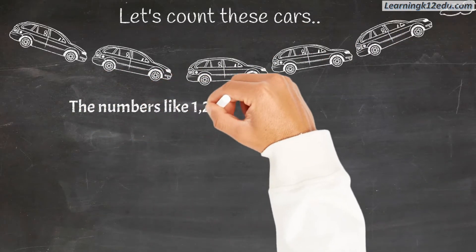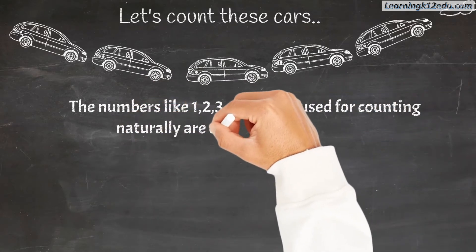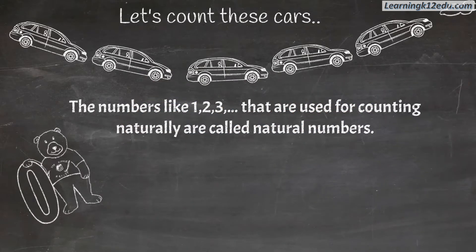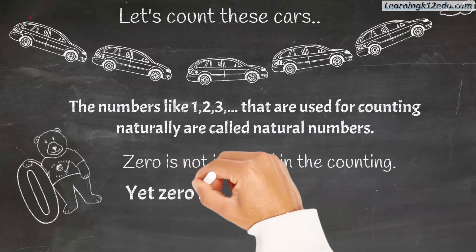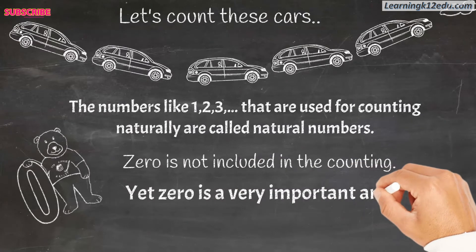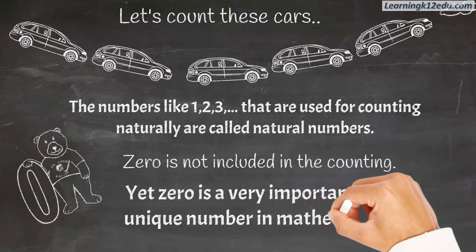The numbers like 1, 2, 3 that are used for counting are called natural numbers. Zero is not included in the counting. Yet, zero is a very important and unique number in mathematics.